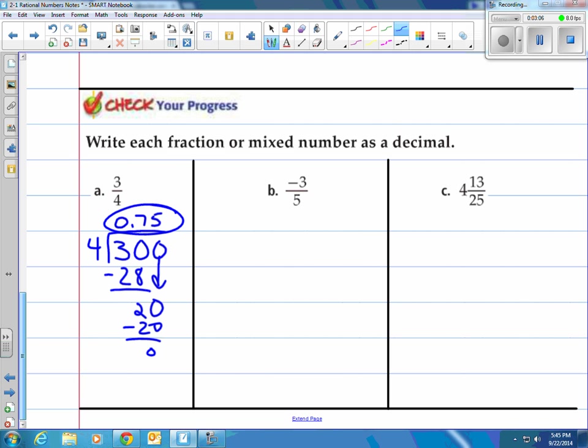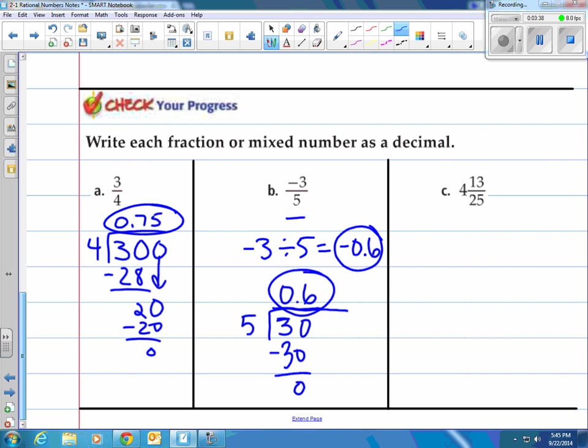How about negative 3 fifths? We know the answer is going to be negative because a negative divided by a positive is going to be a negative answer. So let's take the 3 and the 5 and divide it. We'll just put the negative on it afterwards. How many 5s go into 3? None. So we put a 0 there, put a dot here, put our 0 here. How many 5s go into 30? That would be 6 exactly. We are now done. It's what we call a terminating decimal. It's negative 0.6.